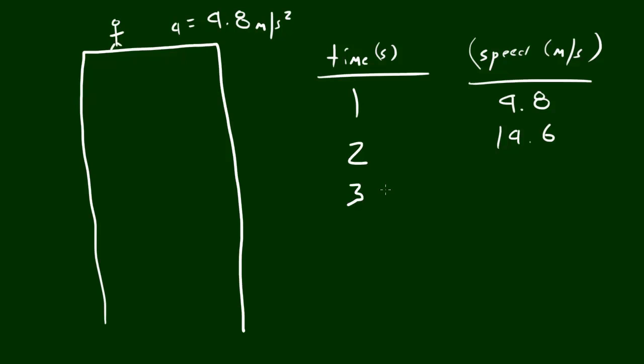Now, after 3 seconds, how fast would this can of tuna be going? It would be going 29.4 meters per second. And after 4 seconds, it would be going 39.2. And you can go on and on and on, but I don't want to waste your time. Basically what you do is you add 9.8 to this each time.